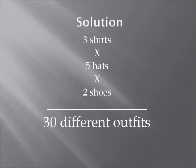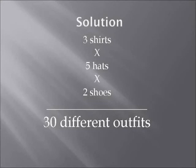The way you find the total number of outfits is you multiply the number of shirts — three — times the number of hats — five — times the number of shoes — two. When you do that, you get thirty. So there are thirty different possible outfits when you have three shirts, five hats, and two pairs of shoes.